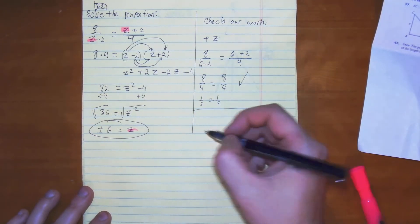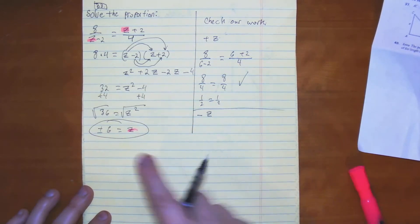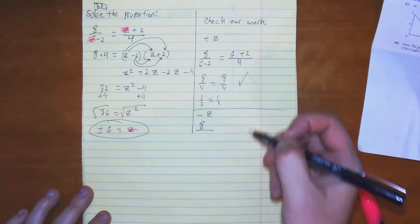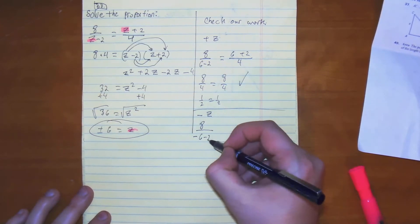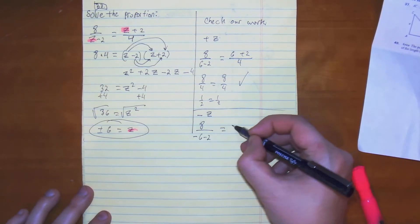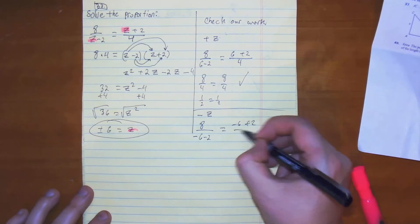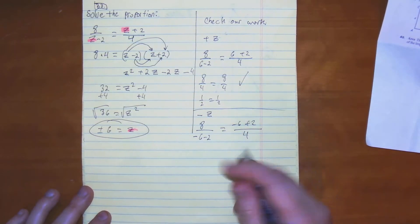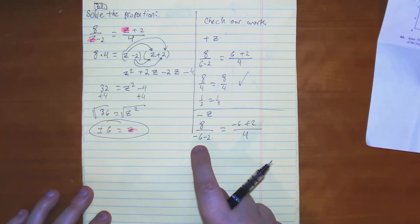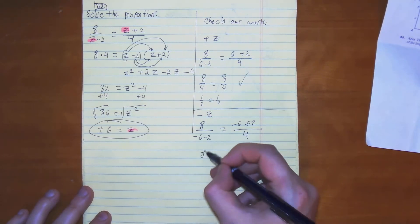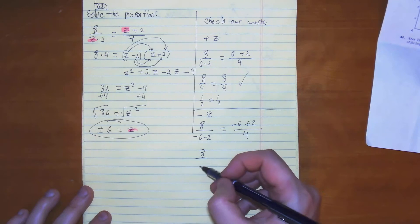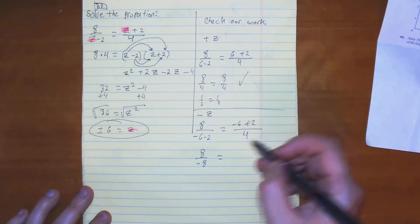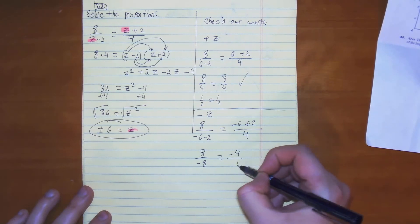Now let's try the negative z. We're going to do the same thing again. 8 over negative 6 minus 2 equals negative 6 plus 2 all over 4. 8 over negative 6 minus 2 gives us 8 over negative 8 equals negative 6 plus 2, which gives us negative 4 over 4.